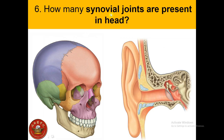How many synovial joints are present in the head? There are only three pairs of synovial joints on each side of the head. The largest is between the temporal bone and the mandible — the temporomandibular joint. The other two very small synovial joints are between the three tiny bones in the middle ear: the malleus, incus, and stapes.